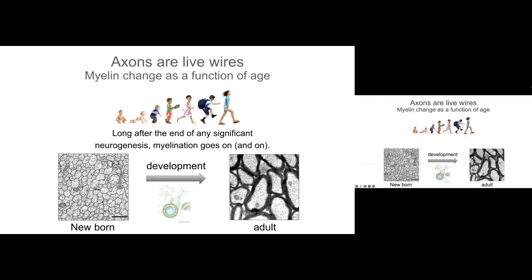They're actually changing a lot as we develop. The thing that changed the most in our development: we are born with axons — here again a cross section — we see axons from a newborn, and you see they're unmyelinated and they're smaller. As we develop, the axons get greater, bigger, and also myelinated, and we actually create much more space. So that's something that happens well after we were born and it continues through our development.